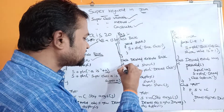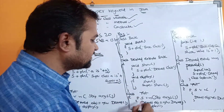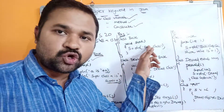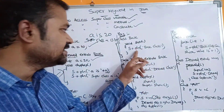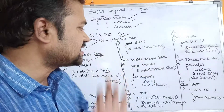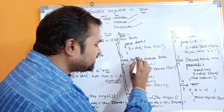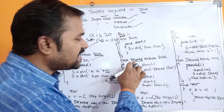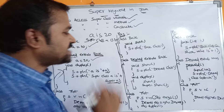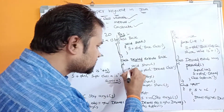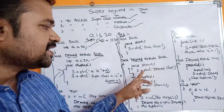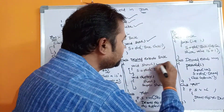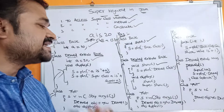Here we also have two classes - a base class, a derived class, and a main method class. The base class contains a method called show: void show() { System.out.println("base class"); }. Next we have the derived class: class derived extends base. The derived class also has a show method: void show() { System.out.println("derived class"); }. So the show method is present in both the base class and derived class.